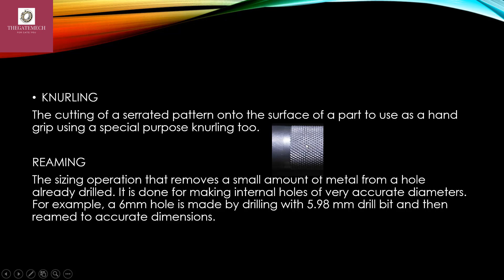Next, reaming. Reaming is a sizing operation that removes a small amount of metal from a hole already drilled. For example, if we used a 5.98 mm drill bit and drilled a hole but need a 6 mm hole, then reaming is used. It is done for making internal holes of very accurate diameters — for example, a 6 mm hole is made by drilling with a 5.98 mm drill bit and then reaming to the accurate dimension.